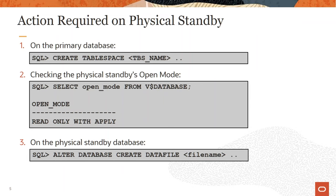In that case, we can take action to synchronize the physical standby database with the primary database. The action required is: suppose you created a tablespace and the standby database open mode is real-time query mode — open read-only with apply. On the physical standby database, since we have to create a tablespace manually, you will create an empty data file using the command: ALTER DATABASE CREATE DATAFILE <data file name>. All other changes to the newly created data file in the primary database will be automatically replicated and applied to that empty data file on the physical standby.